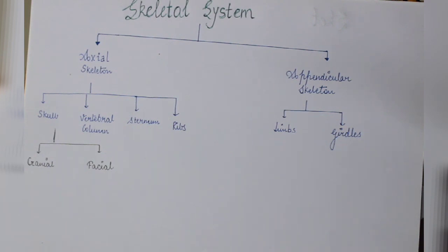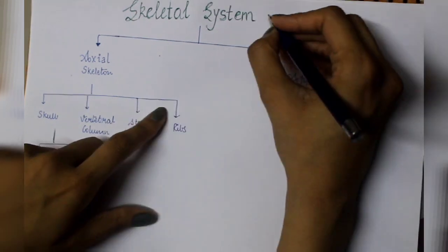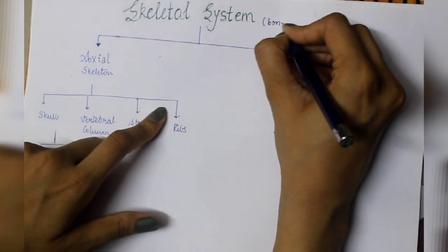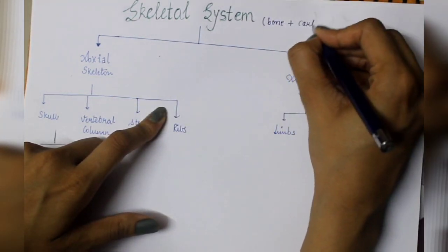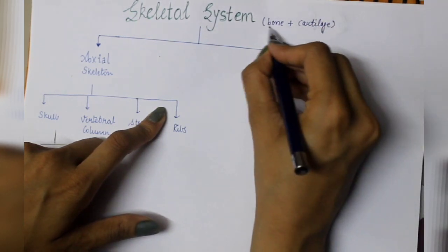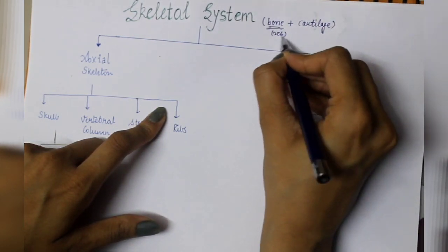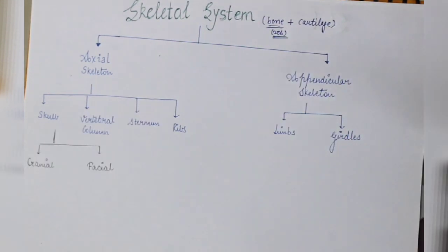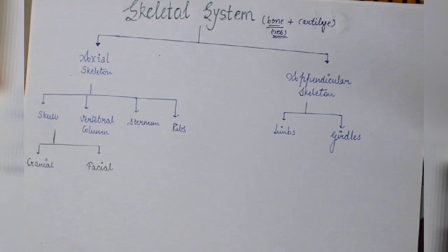Skeletal system is the bony part of our body plus cartilage. It contains bones plus cartilage of our body. There are 206 bones present in a human body which will be discussed in this lecture, and specifically we will also discuss the mnemonics of the bones. If we divide the skeletal system, it is divided into two parts.